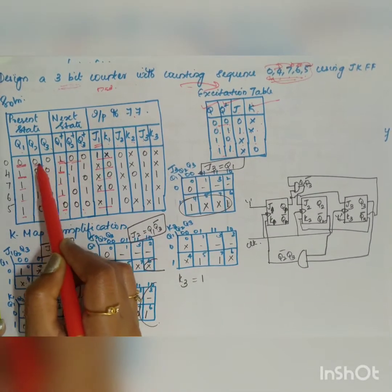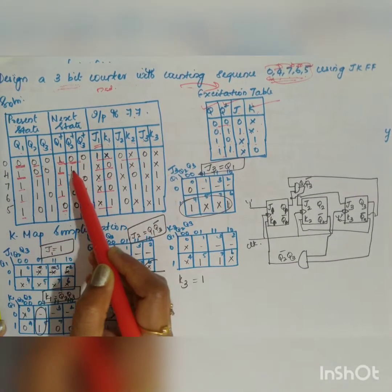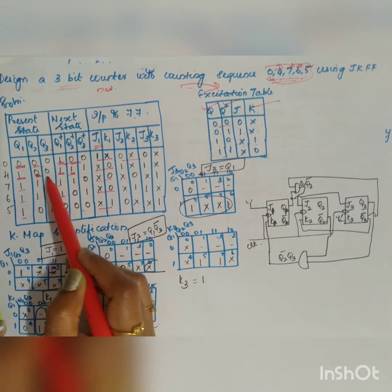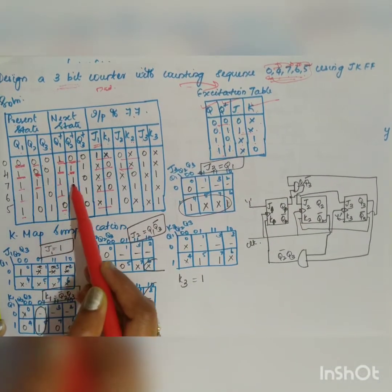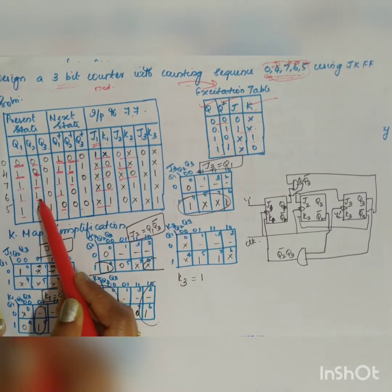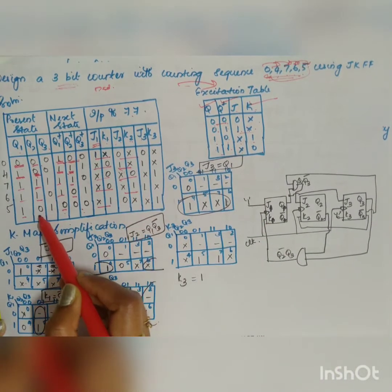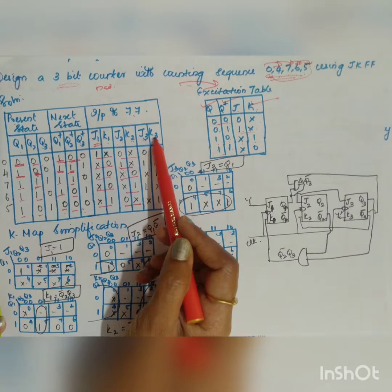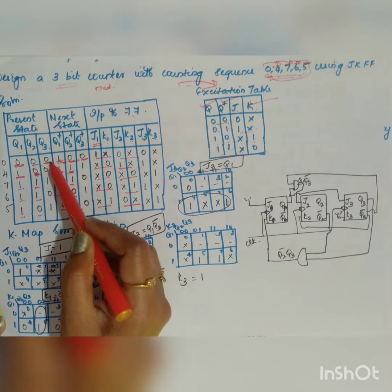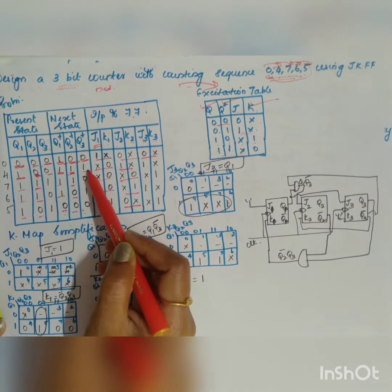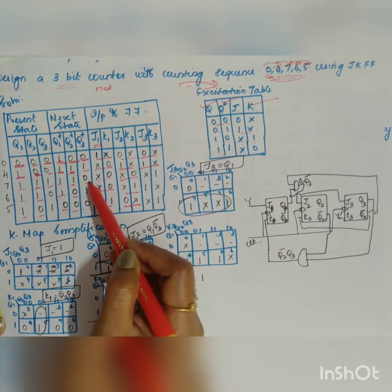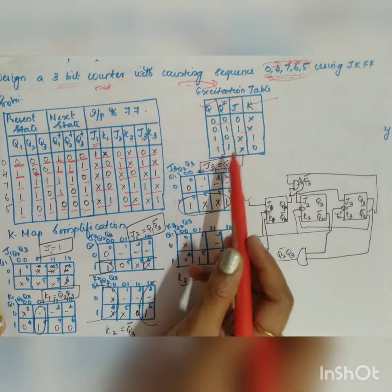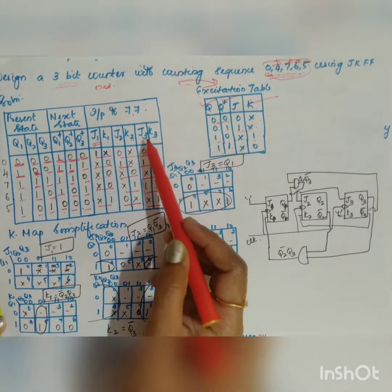For J2K2, compare Q2 and Q2+: 0→0 gives 0x, 0→1 gives 1x, 1→1 gives x0, and 1→0 gives x1; 0→0 gives 0x again. For J3K3, compare Q3 and Q3+: 0→0 gives 0x, 0→1 gives 1x, 1→0 gives x1.